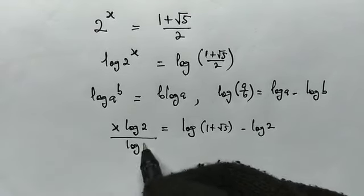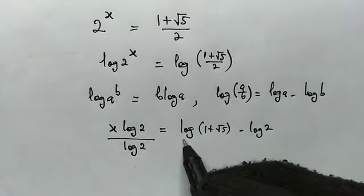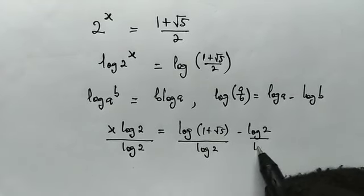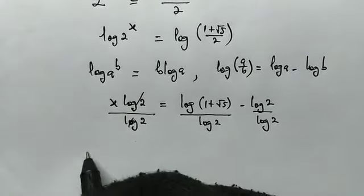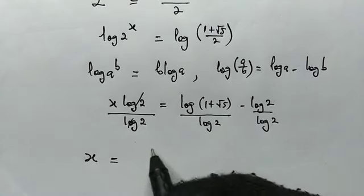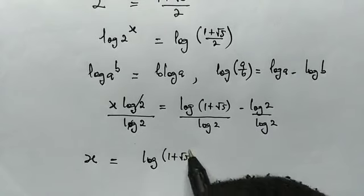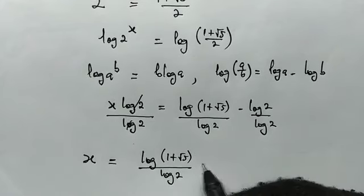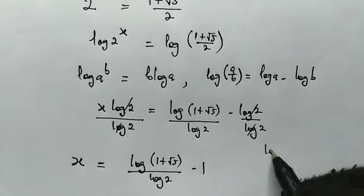So if we divide throughout by log(2), we can split the denominator as this divided by log(2) and this divided by log(2). So this cancels this. We have our x value: x = log(1 + √5)/log(2) - 1, because this cancels this.